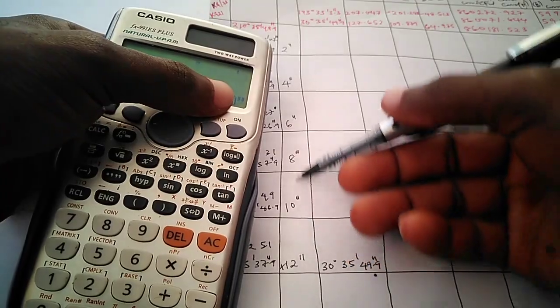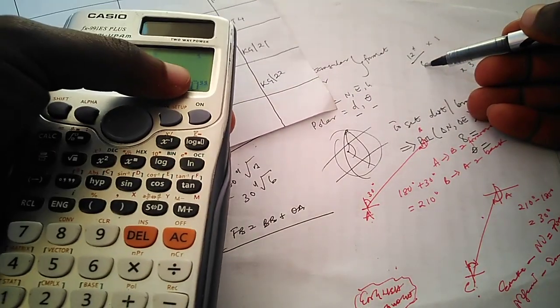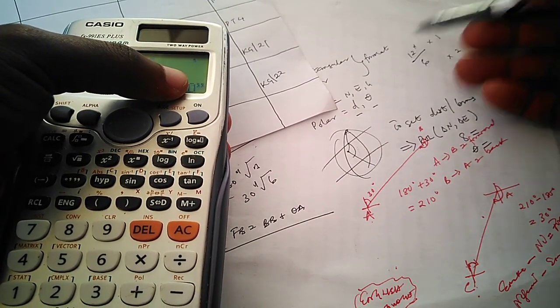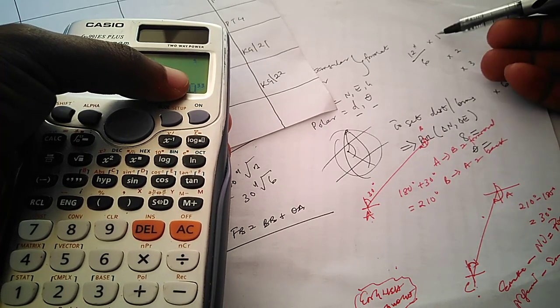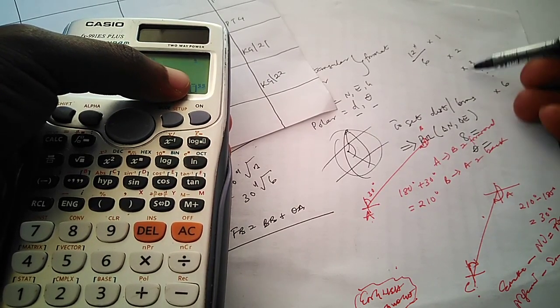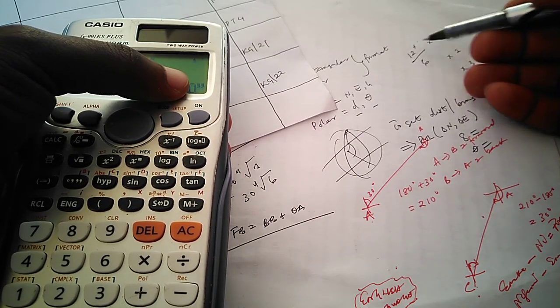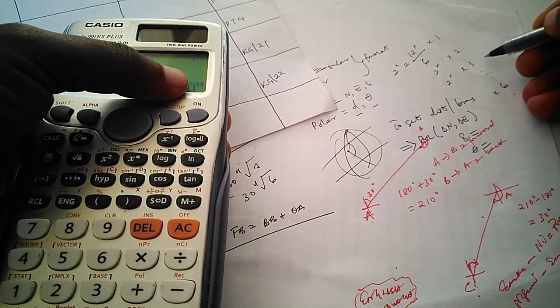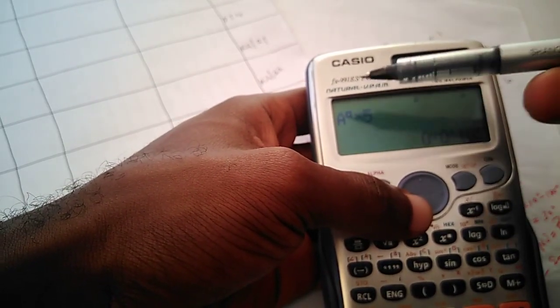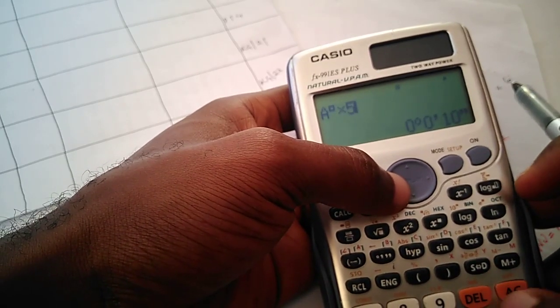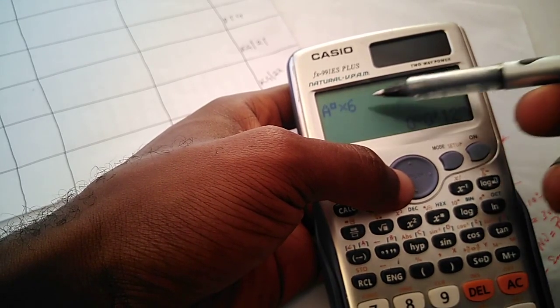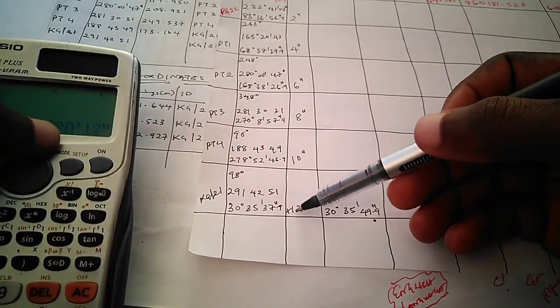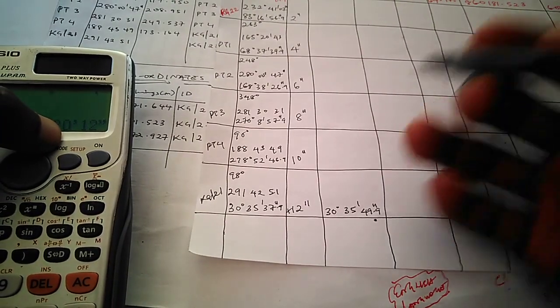So the distribution is clear: we divided the total error of 12 seconds by 6 stations to get 2 seconds, then multiplied by each consecutive station number. By storing 2 seconds as constant A, we only changed the multiplier each time. At station six, 2 times 6 gives 12 seconds — the full error at the last station.